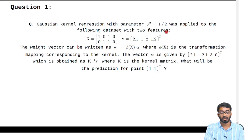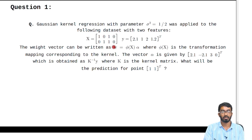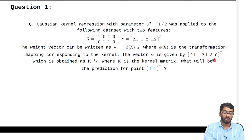Now let's try to solve this numerical problem. Using kernel regression with parameter sigma squared equal to one half, applied to the following data set with two features: x is equal to this matrix and y is equal to those labels. The weight vector can be written as w equal to φ(x) α, where φ(x) is the transformation mapping corresponding to the kernel. The vector alpha is obtained by K^{-1} y, where K is the kernel matrix. What will be the prediction for the point [1, 1]^T?